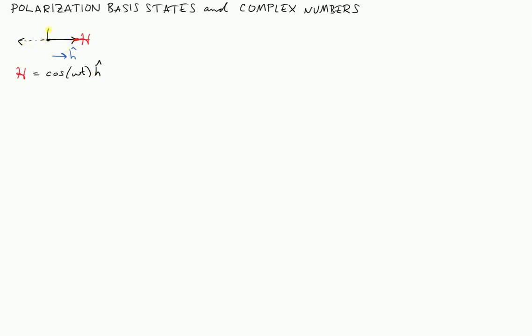We also have vertical oscillations. The vertical state has a red dot at the top indicating its position at t equals zero. Its mathematical representation is very similar: it also varies in time as cosine of omega-t, and it points in the upward and downward direction. We define another unit vector called v-hat for vertical. So here is our first of the three important polarization basis states: the horizontal and vertical states.